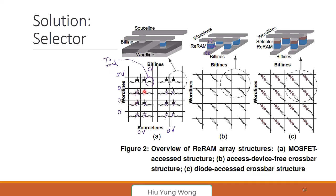You might ask: what about the other cells? For those three cells, we put zero volts because we don't want to select them. Zero-zero doesn't contribute, zero-zero doesn't contribute, so I can really read or program a cell very cleanly. The only problem is I need to add a transistor and also add another signal line.